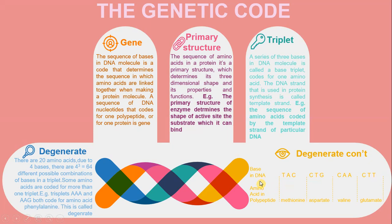For example, the base triplets on DNA — TAC, CDG, CAA — code for the amino acids methionine, aspartic acid, valine, and glutamate in the polypeptide. There are about 20 amino acids, but with four bases, 4 to the power of 3 gives 64 different possible combinations of bases in a triplet. Some amino acids are coded for by more than one triplet — for example, AAA and AAG both code for the amino acid phenylalanine. This is called the degenerate code.